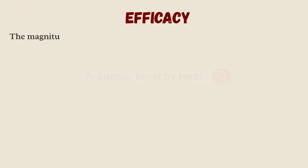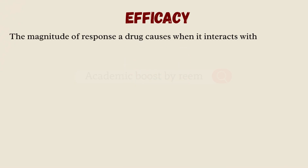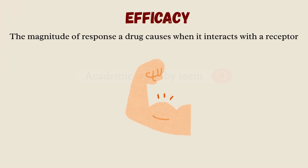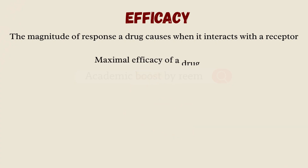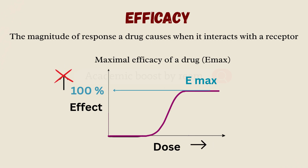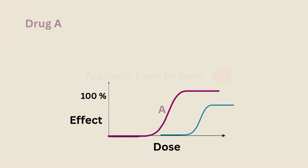Now let's move to the second concept: efficacy. Efficacy is the magnitude of response a drug causes when it interacts with the receptor. In other words, it tells us how strong the effect can get. The maximal efficacy of a drug is called Emax — this is the point on the curve where the drug produces its greatest possible effect. Beyond this point, even if you keep increasing the dose, you won't see any further increase in response.